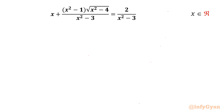Welcome back to Infigyan, my dear friends. Today in this video we are going to take up one very interesting rational equation question. It is: x plus (x² - 1)·√(x² - 4) over (x² - 2) equals 2 over (x² - 3), where x belongs to the real numbers.